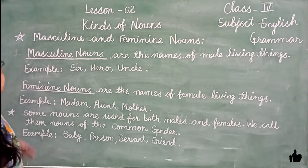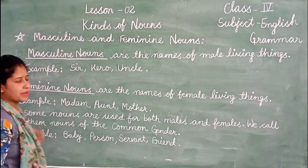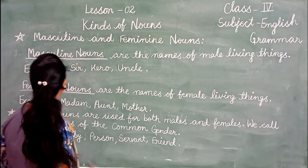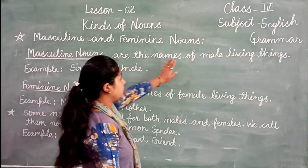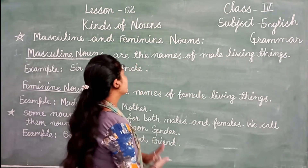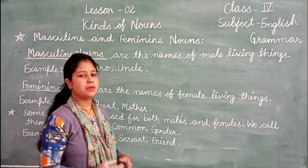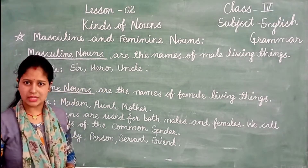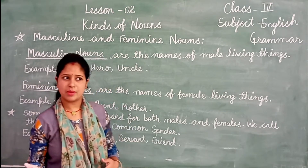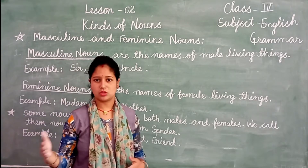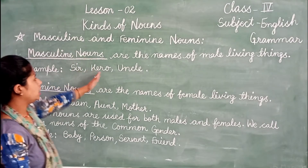Now we will read about masculine and feminine nouns. Masculine nouns are the names of male living things. Male means boys — boys, fathers, brothers, and uncles are all male living things, called masculine nouns. For example: sir, hero, uncle.